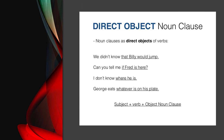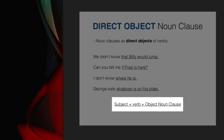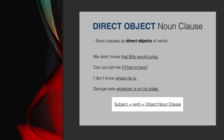Object noun clauses — noun clauses as objects of verbs: 'We didn't know that Bill would jump.' 'Can you tell me if Fred is here?' 'I don't know where he is.' 'George eats whatever is on his plate.' Again, notice the structure: subject + verb + object noun clause.